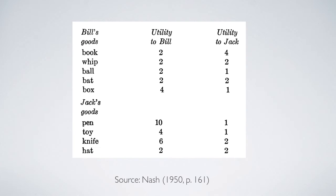To verify his theory, Nash offered a numeric example. Bill has five goods, and their utility levels to Bill and Jack are listed in the upper part of this table.